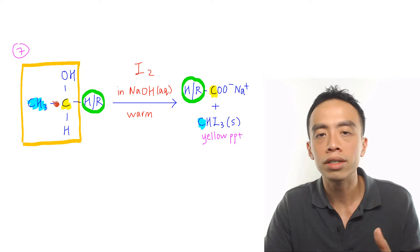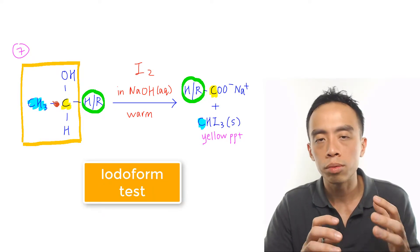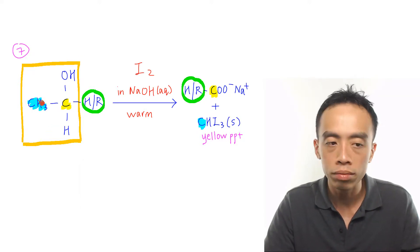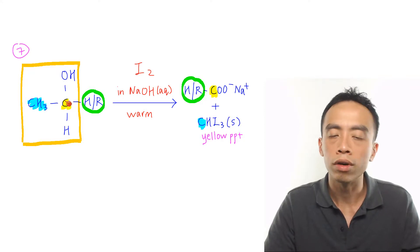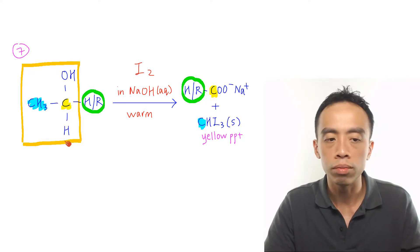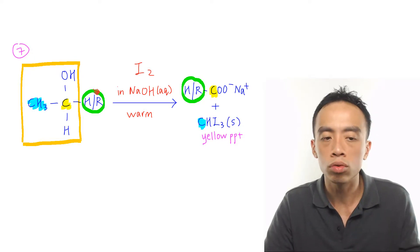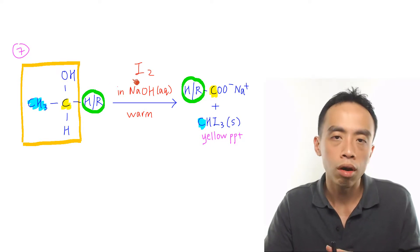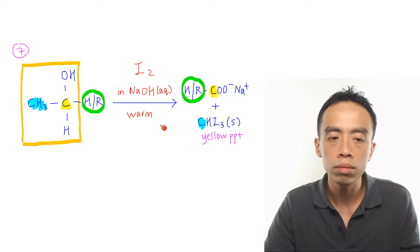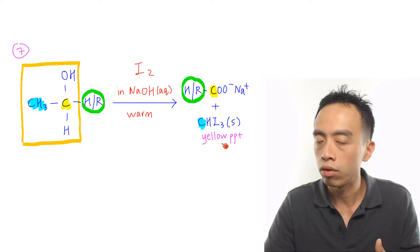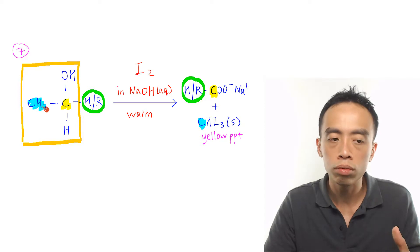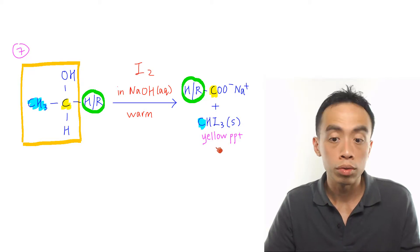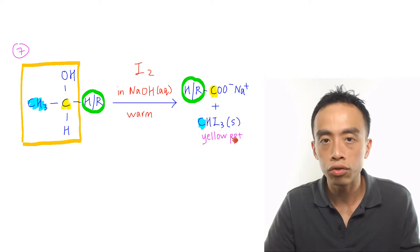Major reaction number 7 is the triiodomethane test for specific types of alcohols which contain the following structure. You must have a methyl group — a CH3 group — bonded to a carbon with an OH and a hydrogen. Then it must also be bonded to a hydrogen or an alkyl group. In the presence of I2 in NaOH aqueous, warm, the methyl group (shown in blue) will be converted to triiodomethane (CHI3), giving a yellow precipitate — the observation for this triiodomethane test.